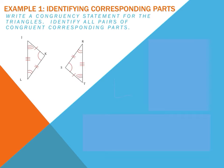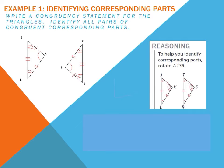Let's look at example one, where we will identify all the corresponding parts. Notice the two figures are not oriented in the same direction. One strategy is to rotate them, allowing you to identify the corresponding parts a lot easier.